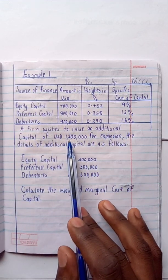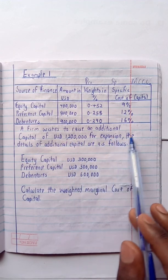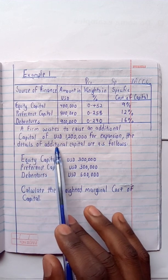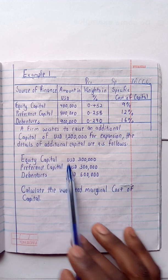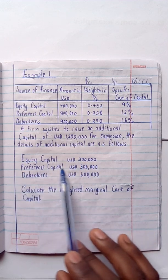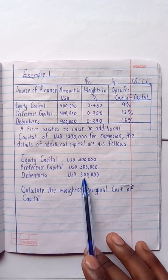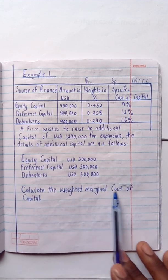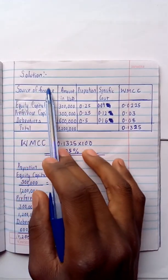A firm wishes to raise additional capital of US$1,200,000 for expansion. The details of the additional capital are as follows: equity capital US$300,000, preference capital US$300,000, and debentures US$600,000. Calculate the Weighted Marginal Cost of Capital.